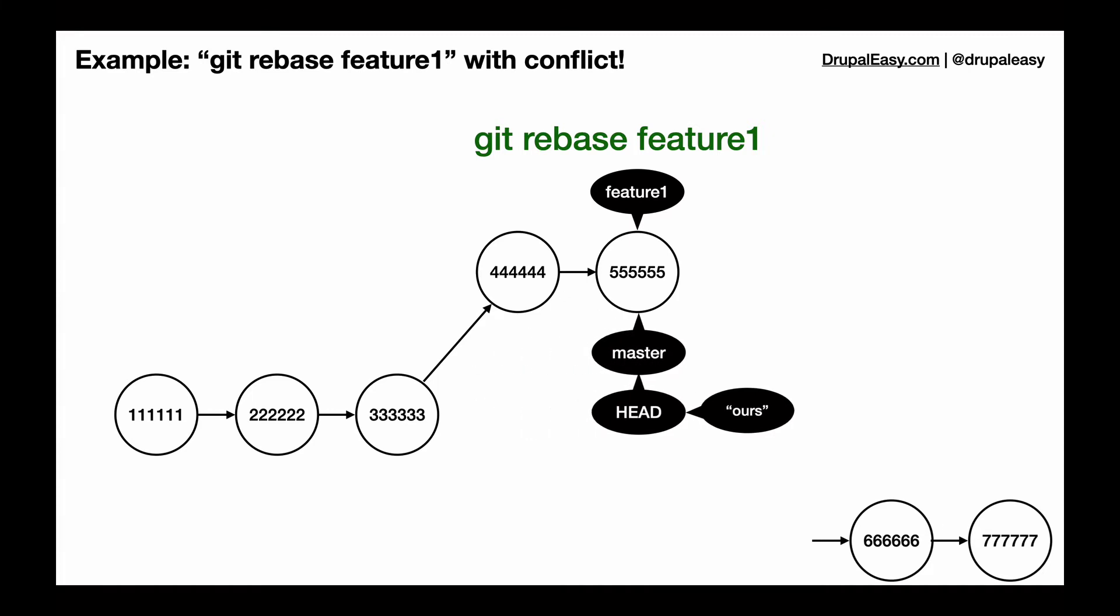When it gets to the end of the feature one branch, the next step is to start playing back the commits it took off. In this case 666 and 777. So when 666 is tried to be applied, we end up with a conflict.